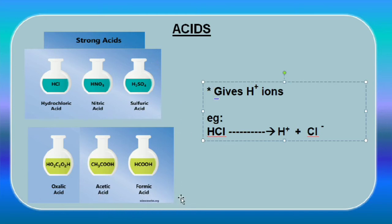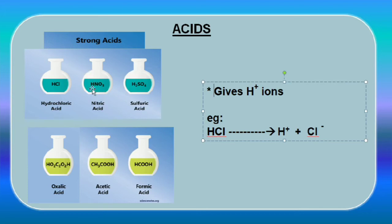Remember what are strong acids and what are weak acids. Whether it is a strong acid or a weak acid, if that compound releases H+ ions on dissociation, it is classified as an acid. For example, hydrochloric acid HCl dissociates into H+ and Cl- ions. Similarly, nitric acid dissociates into H+ and NO3- ions. The same applies to acetic acid, oxalic acid, and formic acid — they all release H+ ions on dissociation.